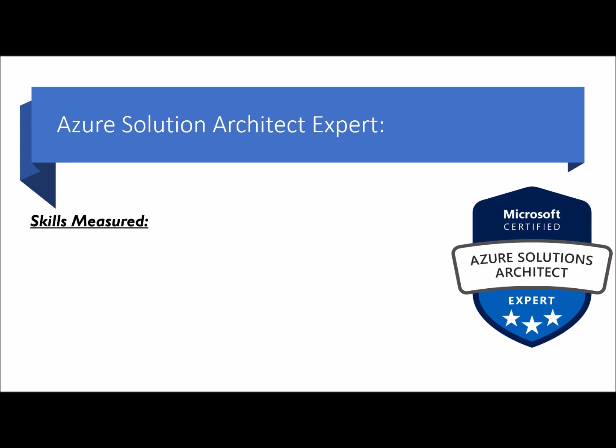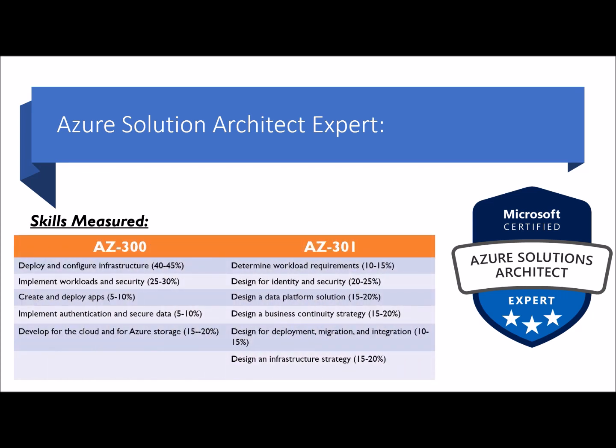For AZ-300, the skills measured are deploy and manage infrastructure, implement workloads and security, create and deploy apps, implement authentication and secure data, and develop for cloud and Azure storage. For AZ-301, skills include determine workload requirements, design for identity and security, design a data platform solution, design a business continuity strategy, design for deployment, migration and integration, and design an infrastructure strategy. On successful completion of both examinations, you would be certified as Azure Solutions Architect Expert.